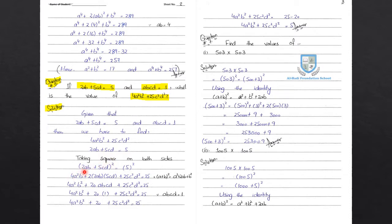When we square 2ab, we get 4a square b square. Then 2 times 2ab times 5cd gives the middle term. And 5cd whole square gives 25c square d square. So 4a square b square plus 20abcd plus 25c square d square is equal to 25.